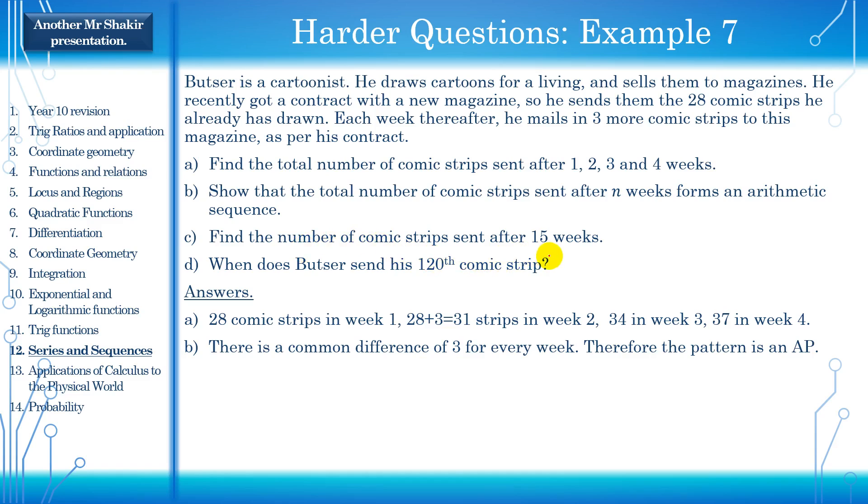Find the number of comic strips sent after 15 weeks. TFN. You see the TFN formula. TF15. We would have N is equal to 15. So solve for T15, sub in N is equal to 15 and you get 28 plus 15 minus one, which is 14, 14 times three. 28 plus 14 times three. And you'll get after 15 weeks, 70 comic strips will have been sent.